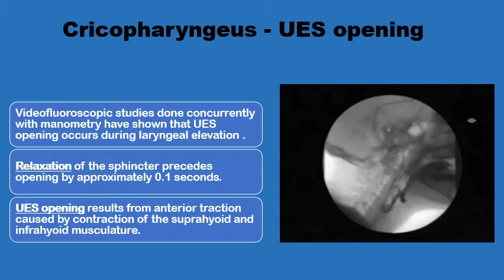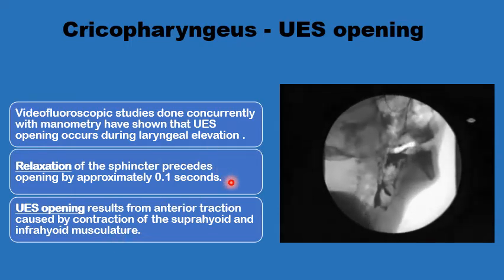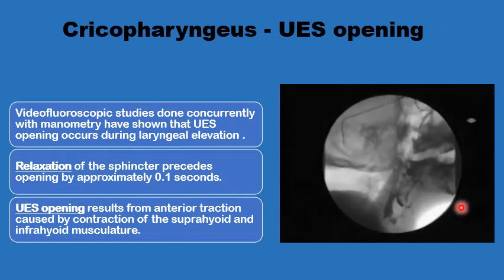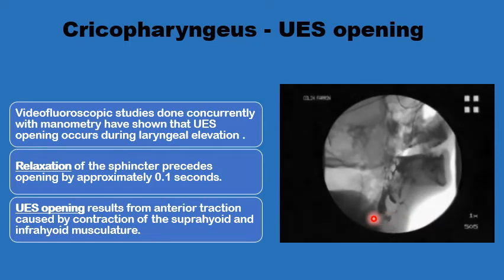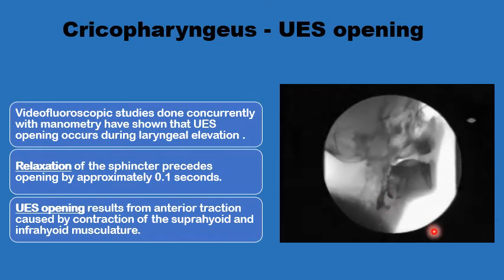The final stage of pharyngeal swallowing is the opening of the upper esophageal sphincter and the cricopharyngeus — this is actually a two-stage process. It starts with the relaxation of the cricopharyngeus, which relaxes first, 0.1 second before the actual opening. If the cricopharyngeus is not relaxed enough, the bolus will just accumulate above the cricopharyngeus. The second stage of actual opening is traction on the cricopharyngeus by the upward and anterior movement of the larynx, which opens the sphincter widely for the bolus to move. So it is relaxation of the muscle first, then after 0.1 second, actual opening by traction of the larynx anteriorly and superiorly.